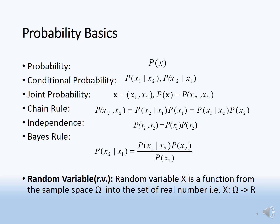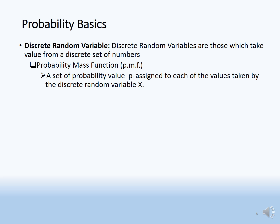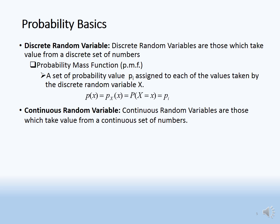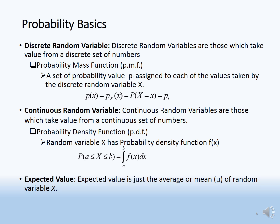Random variable: a random variable is simply a mapping from all elements of the sample space to the set of real numbers, that is omega to R. Discrete random variables take values from a discrete set of numbers, and a probability mass function is used to calculate their probability. Continuous random variables take values from a continuous set of numbers, and a probability density function with integration is used.